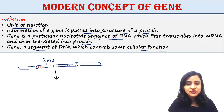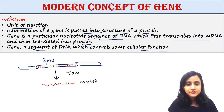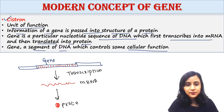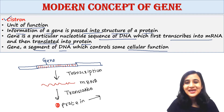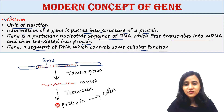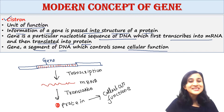The gene is basically a part of DNA. After transcription it becomes mRNA, and after translation it becomes protein. Protein is associated with different types of cellular functions. This is the concept of cistron.